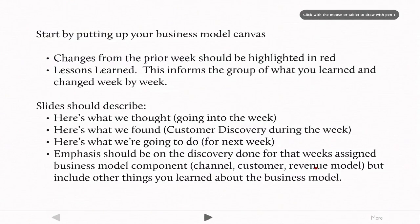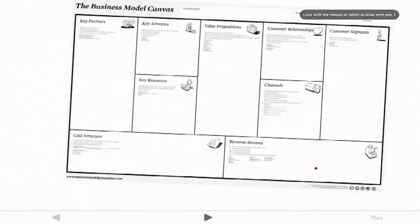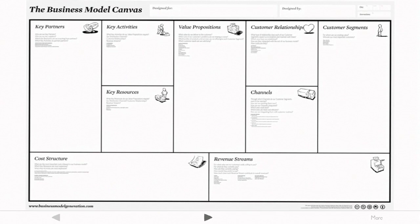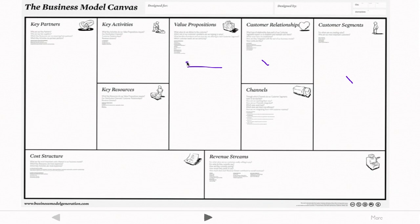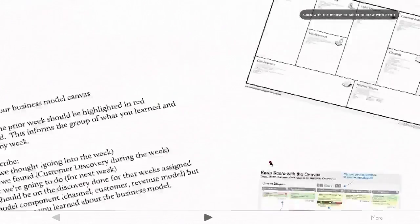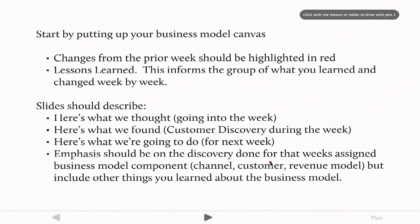You want to start by putting up on your blog your business model canvas. The business model canvas includes the customers, how you segment those customers, what your value propositions are to the various people you'll be interacting with, what your revenue stream is going to be — are you a subscription service, a one-time payment, how do you actually get paid for the product, and so on. Any changes from the prior week should be highlighted.